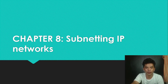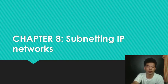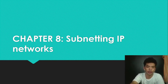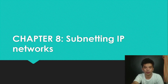Design considerations for IPv6 — the IPv6 global unicast address normally consists of a 48-bit global routing prefix, a 16-bit subnet ID, and a 64-bit interface ID. Subnetting using the subnet ID is the standard approach for IPv6.